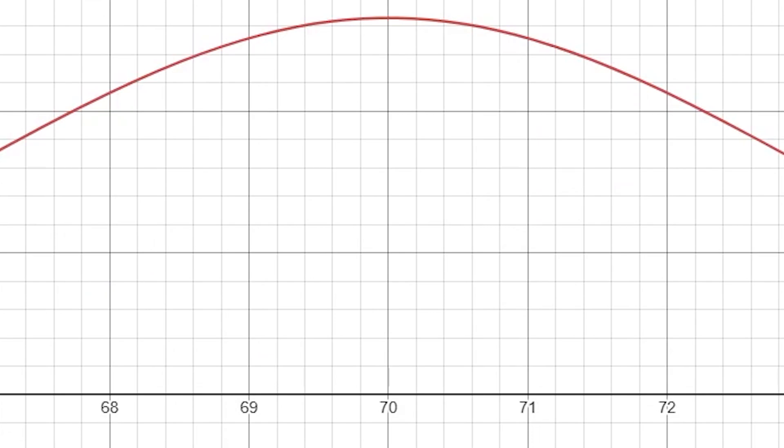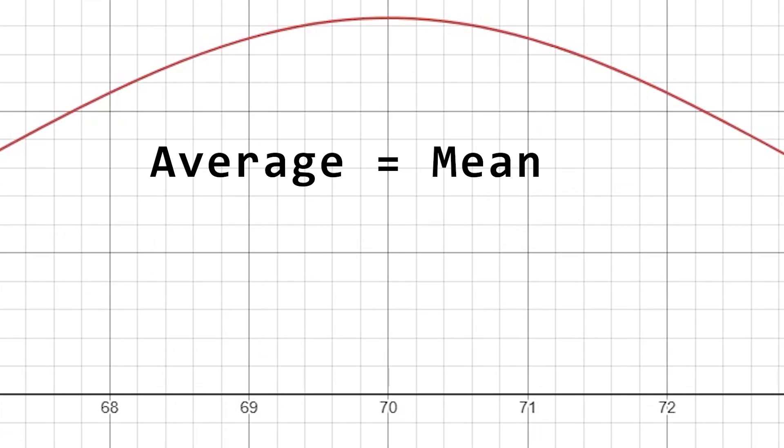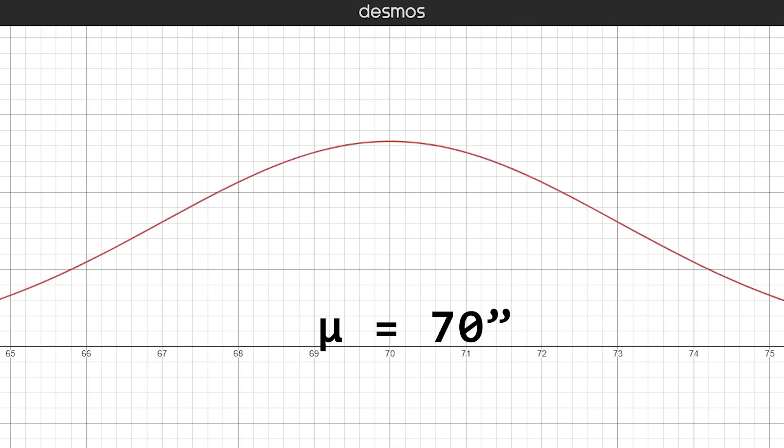And in statistics, which is what we're doing right now, we call the average the mean, and we represent it with this funny-looking U called mu. So for this distribution, we can say that the mean is 70.